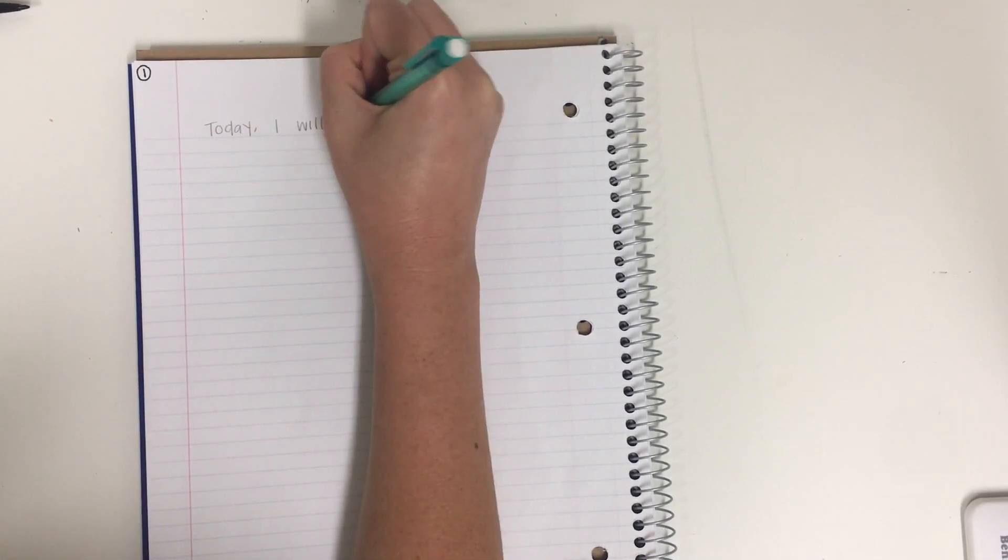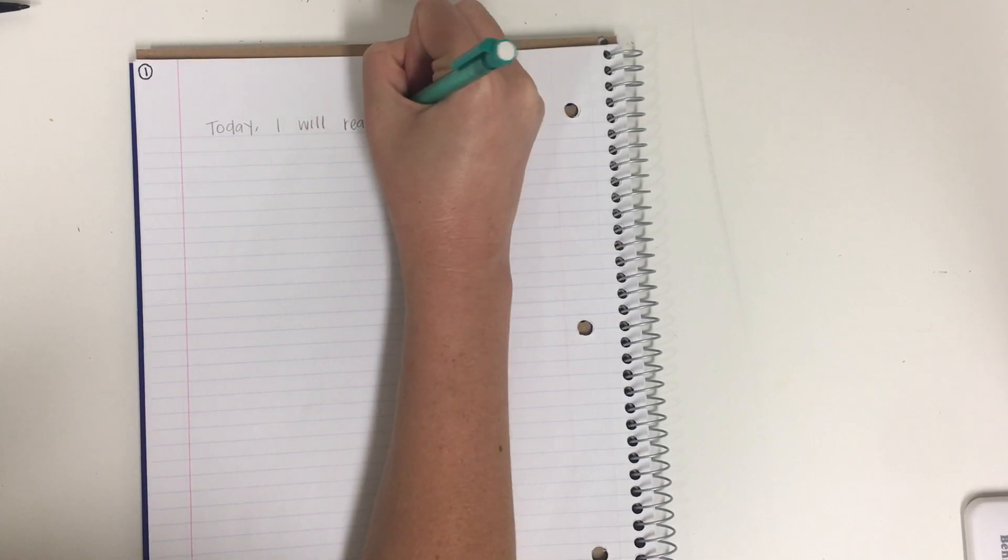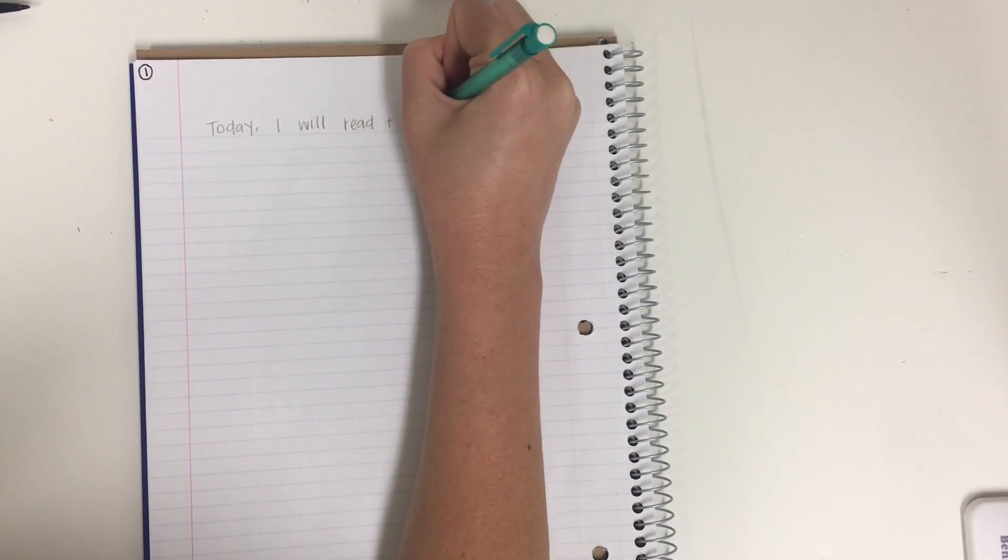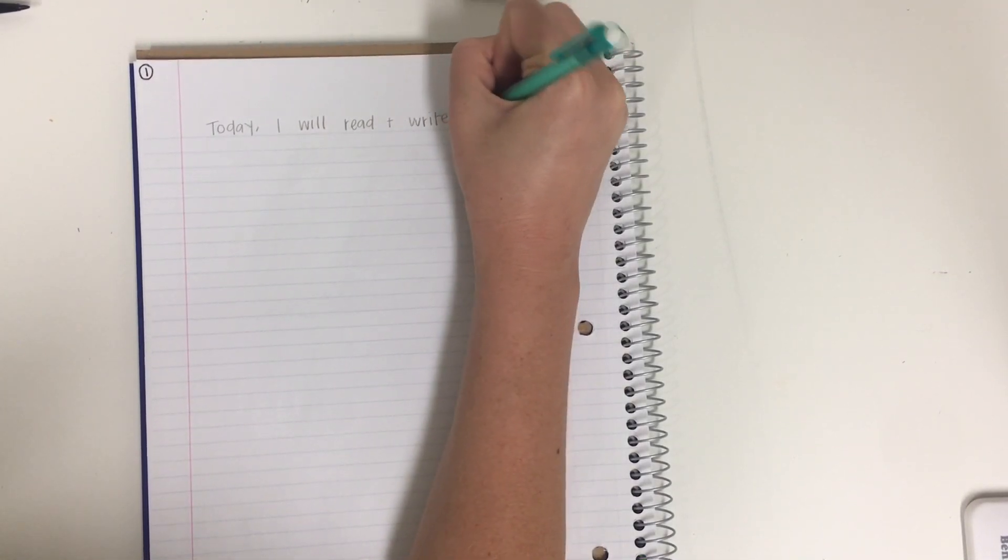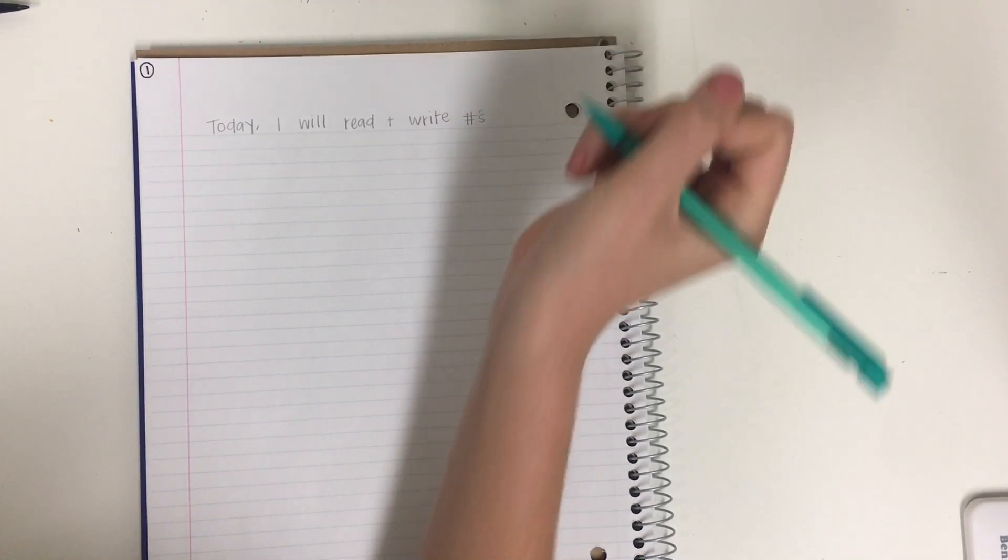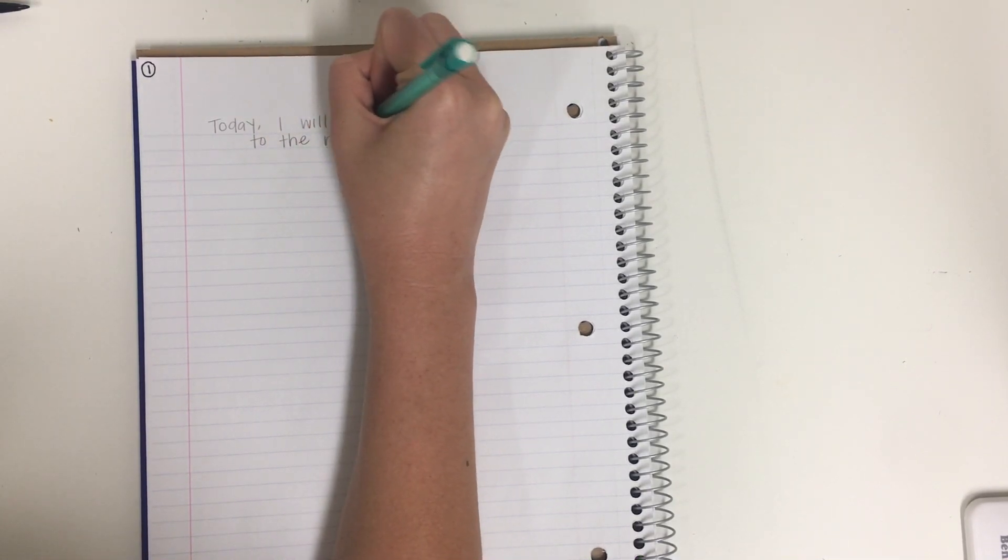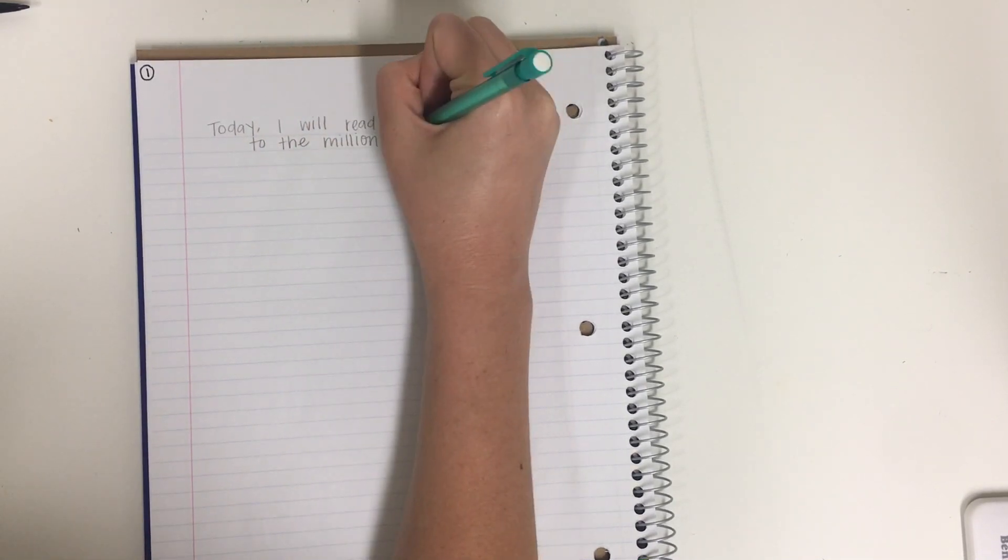Okay, so today we are going to work on place value, so I'm going to write my objective at the top. So I'm going to write, today I will read and write numbers to the millions place.